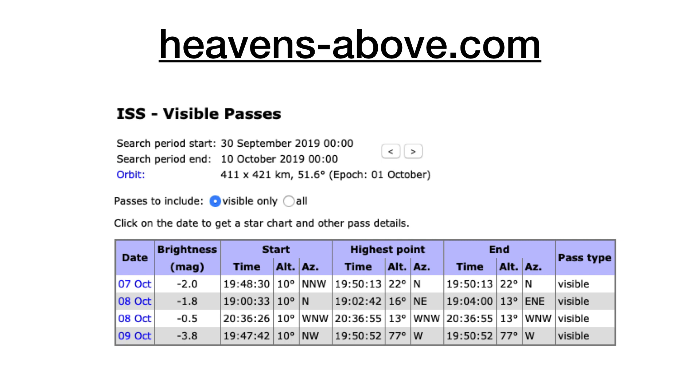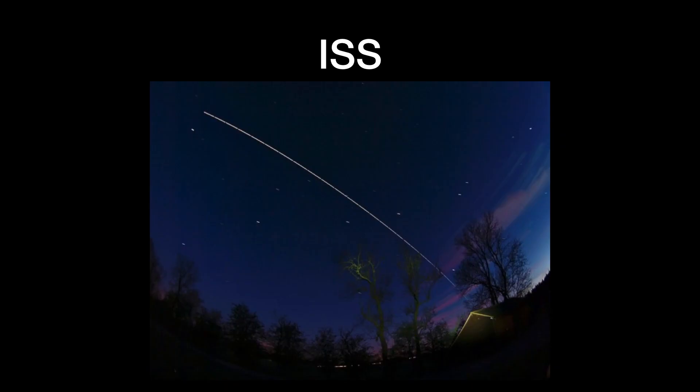But I do want to make a plug for the space station. Have you ever seen the space station? You can see it. It is awesome. You should do it. If you go to this website, heavensabove.com, and enter your location, you can look up the next pass of the space station. On this chart, the brightness, the greater the negative number, the better. Negative 3.8 on October 9th is going to be a good one. It gives you the start time, the highest altitude, the end time. You can just set your alarm for 745 and go outside and look for it. You're going to see it. It's great. It looks like a bright star that moves way too fast. It takes about four minutes to go across the sky. If you did a time lapse, this is what it looks like. You can totally see it. It doesn't even have to be that dark. Do it. It's awesome.